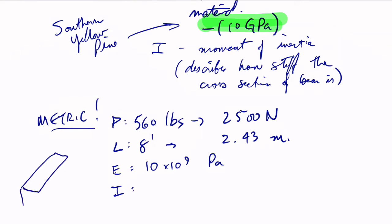1/12 bh cubed, where this is b and this is h. 1/12 bh cubed, which is 1/12 times 0.0762 times 0.292 cubed.